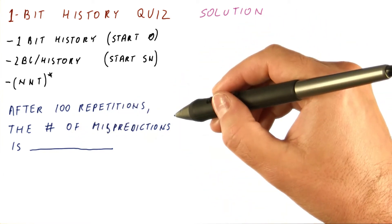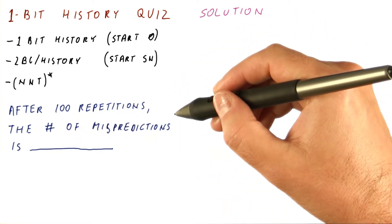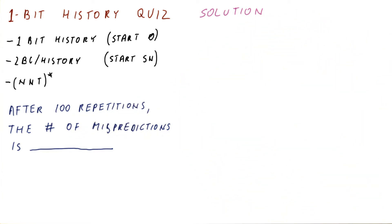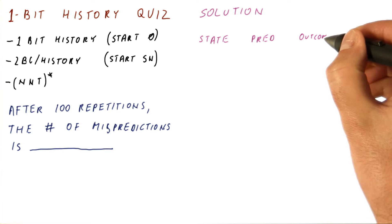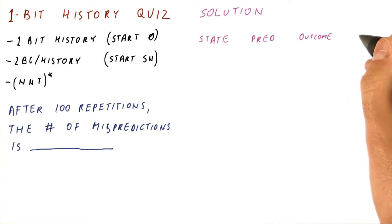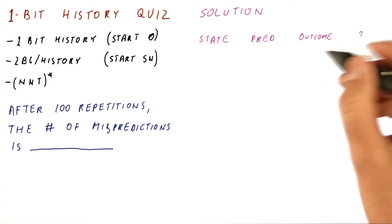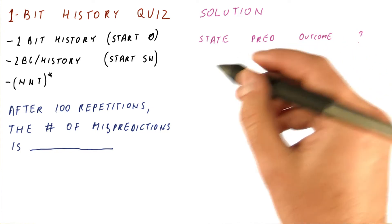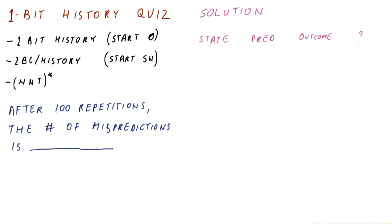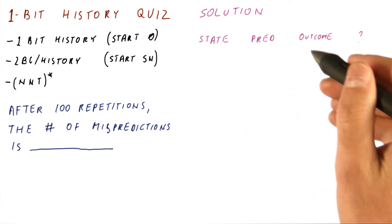One way to approach this problem is simply to work through the table like we have seen before. We will have our state, the prediction, the outcome, and whether we are correct. Now we will just work through the outcomes: N, N, T, repeating.